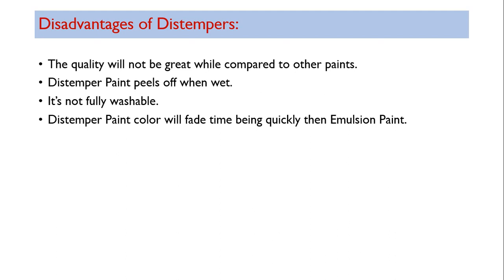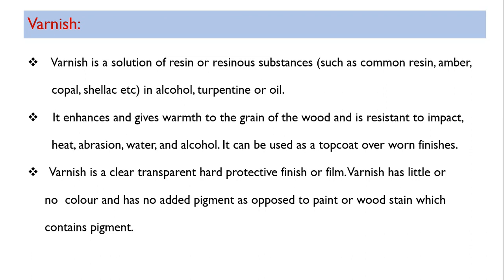Distemper paint color fades more quickly than emulsion paint. While it becomes faded after three years, emulsion and oil paints last for a longer period compared to distempers.